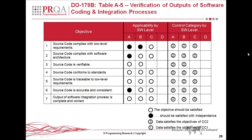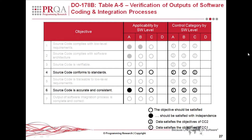Similar to IEC 61508 and ISO 26262, the DO-178B and DO-178C have compliance tables formatted slightly differently but numbered 1 through 7, with DAL levels A through D at the top — D being the lowest risk and A the highest. DO-178B also introduces the concept of independence. Looking at specific examples: source code conforming to standards and source code being accurate and consistent are objectives that static analysis tools would be able to help you with.